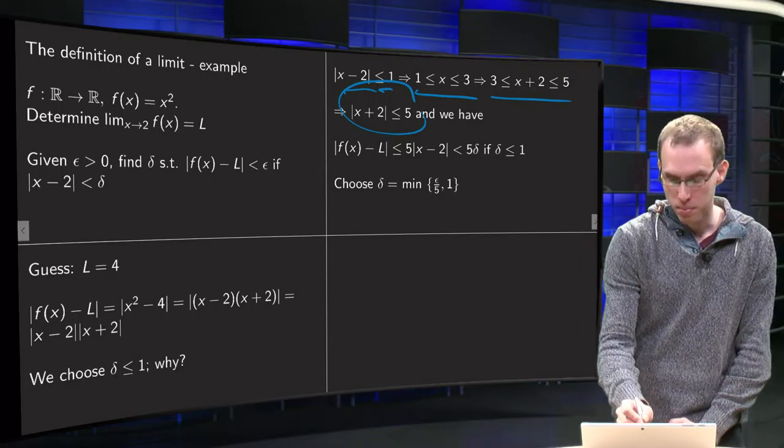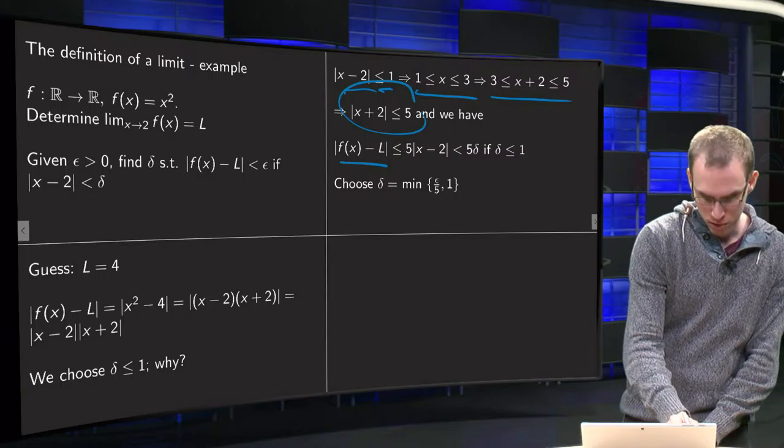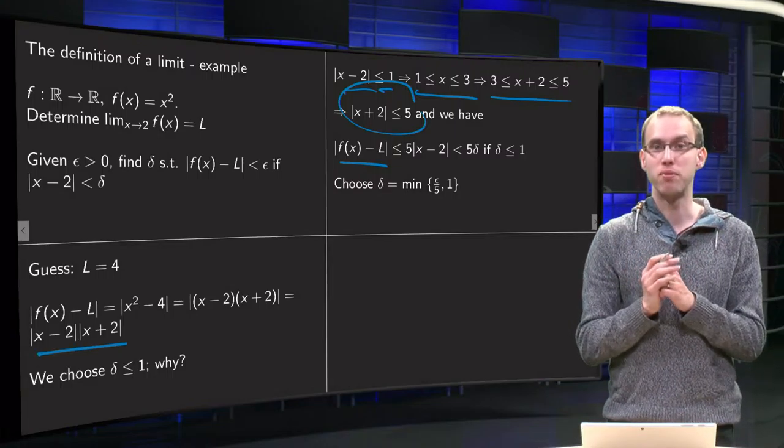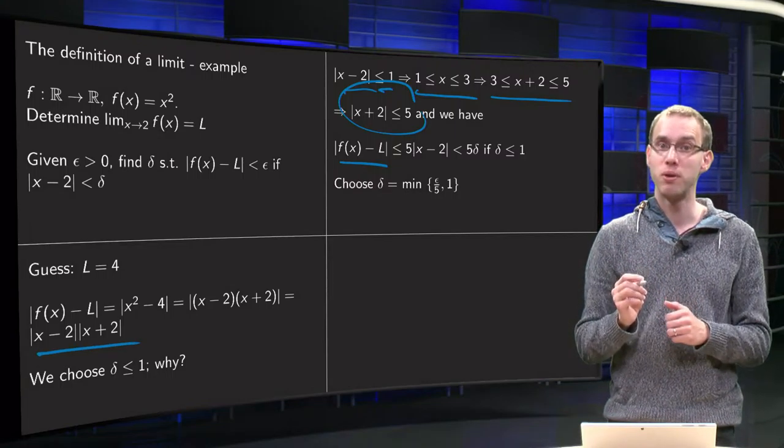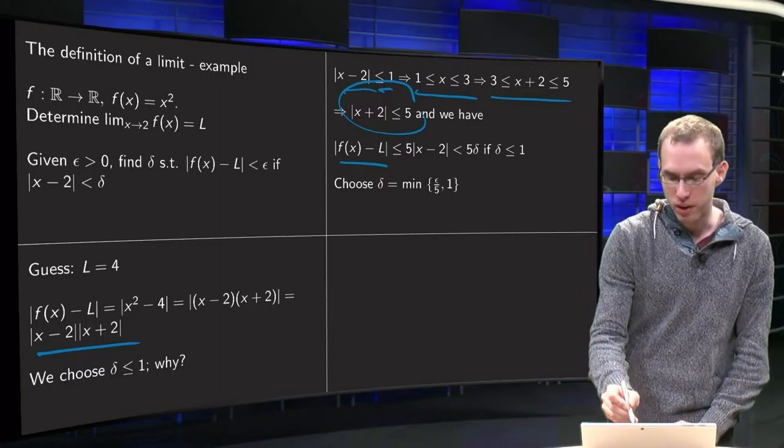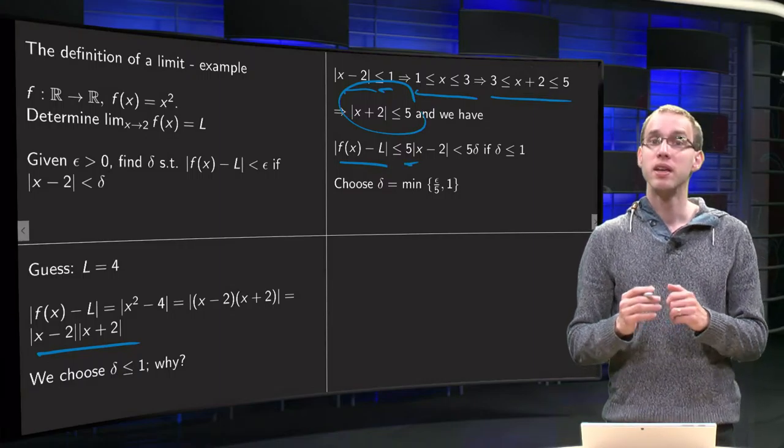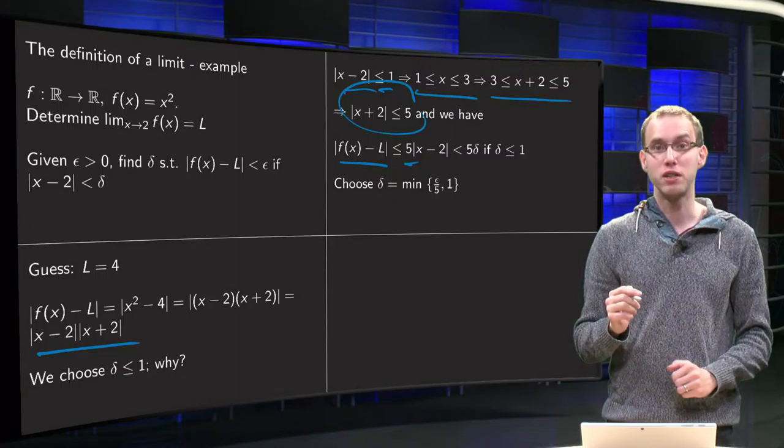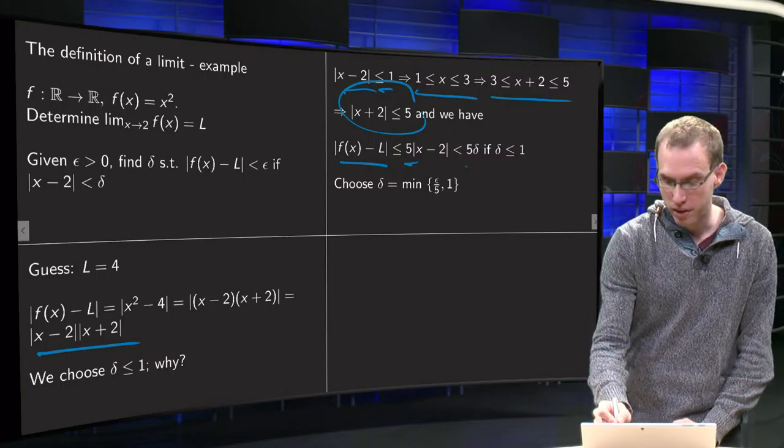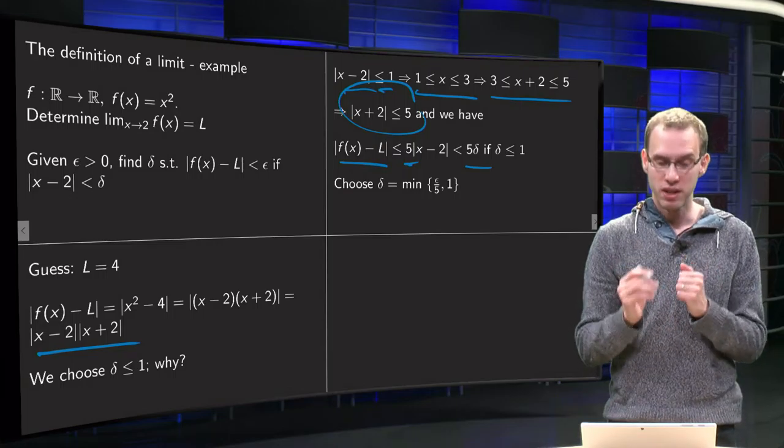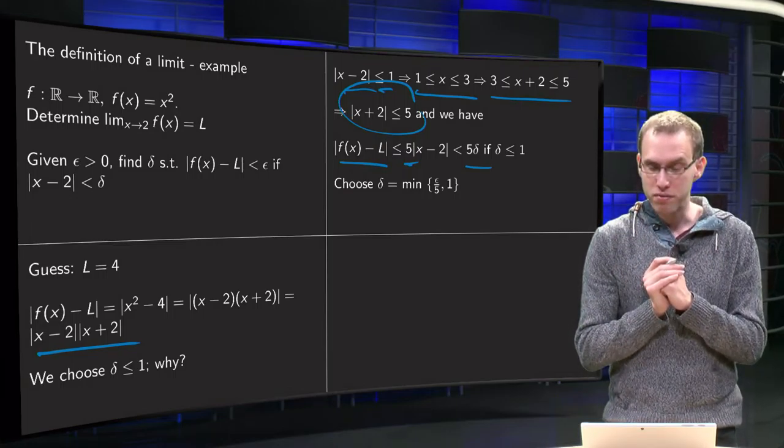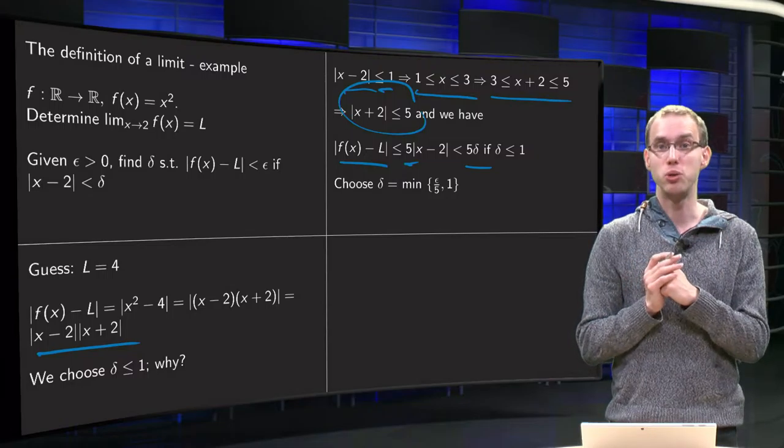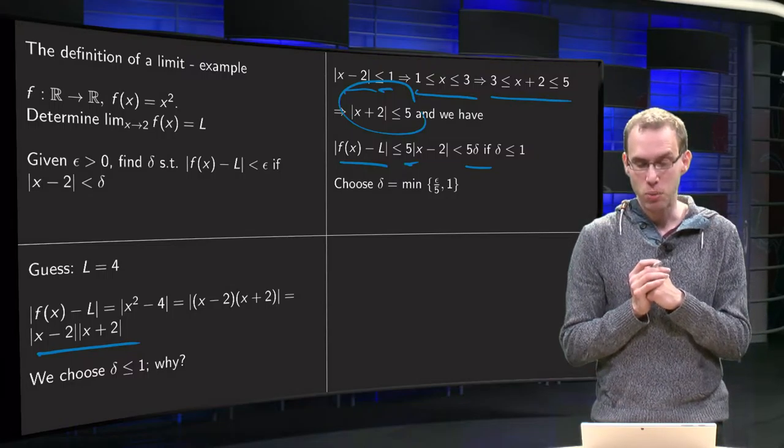So we know |f(x) minus L| is smaller or equal than |x minus 2| times |x plus 2|, and |x plus 2| is at most 5, so |f(x) minus L| ≤ 5|x minus 2|, and |x minus 2| will be smaller than delta, so we get |f(x) minus L| ≤ 5δ if we choose delta less than 1.